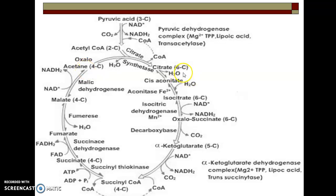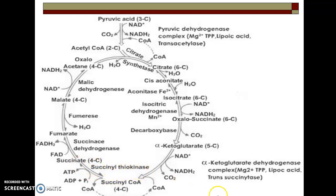It's very easy to remember the names of enzymes involved in each step, because the name of each enzyme corresponds to its previous substrate. For example, isocitric acid is converted into oxalosuccinic acid with the help of enzyme isocitrate dehydrogenase. Similarly, alpha-ketoglutarate is converted into succinyl-CoA by enzyme alpha-ketoglutarate dehydrogenase, and succinyl-CoA is converted into succinic acid by enzyme succinyl-thiokinase.